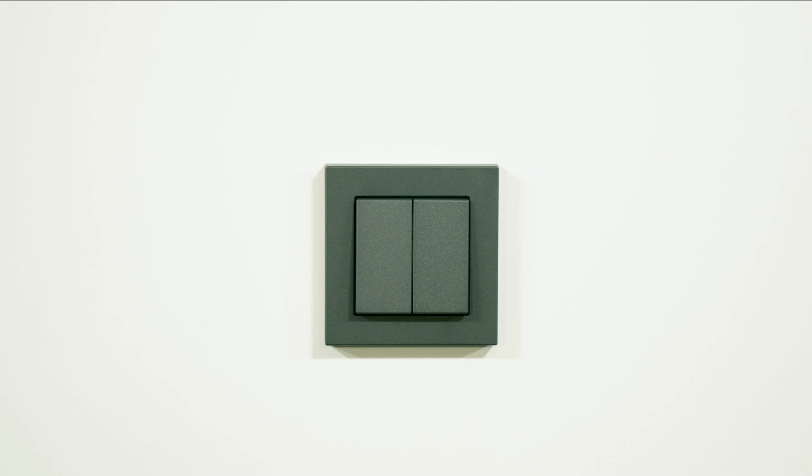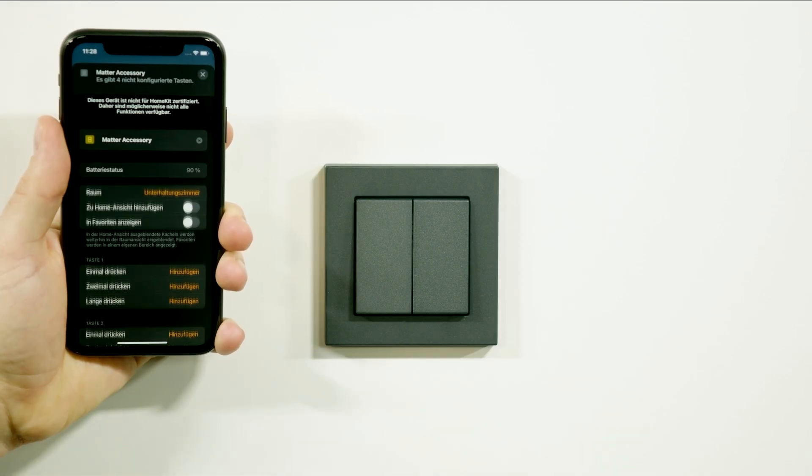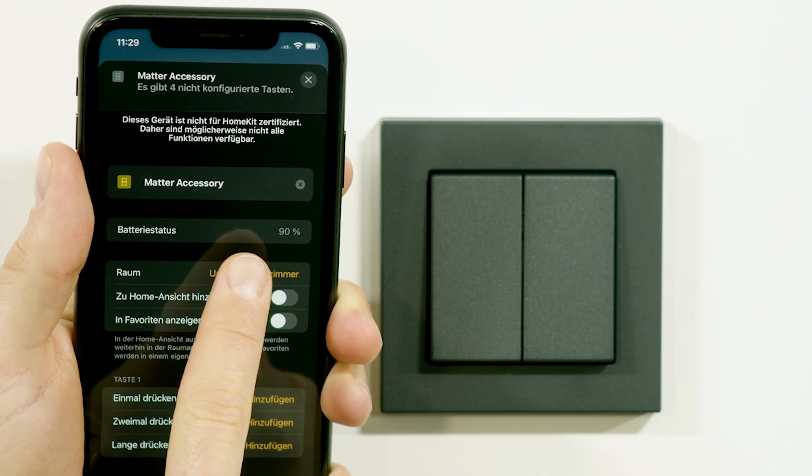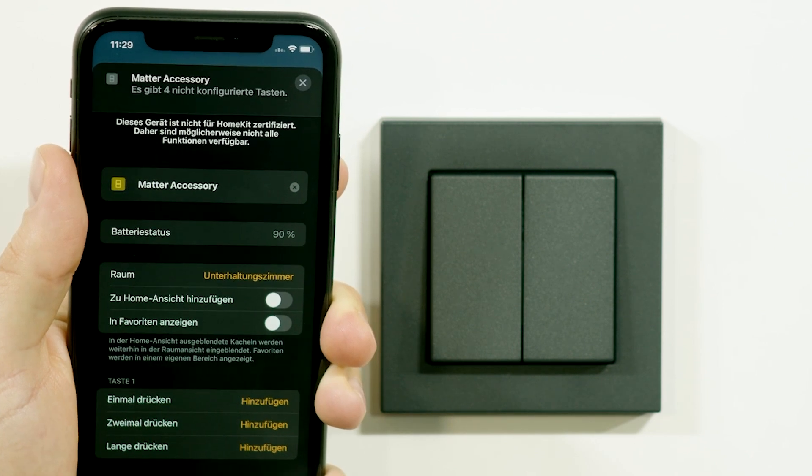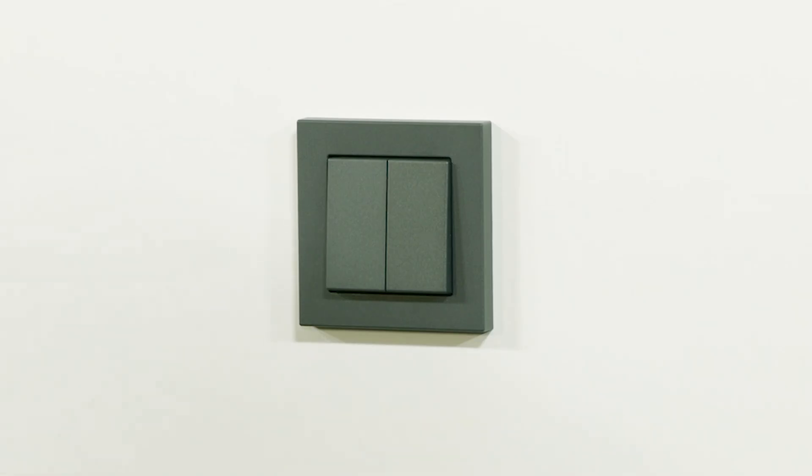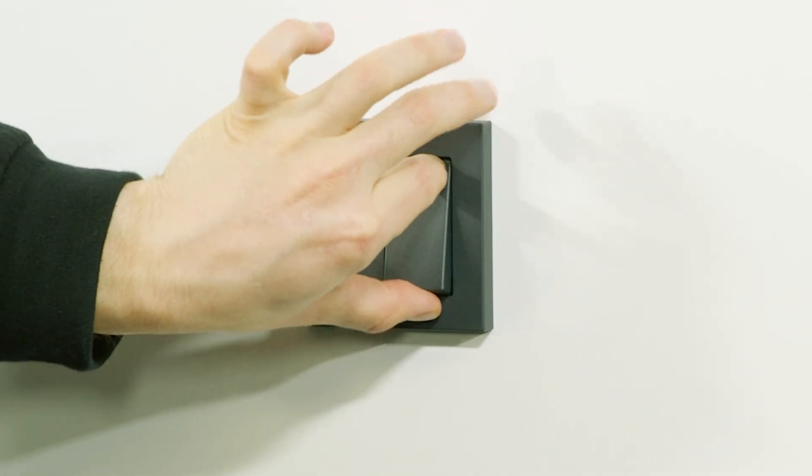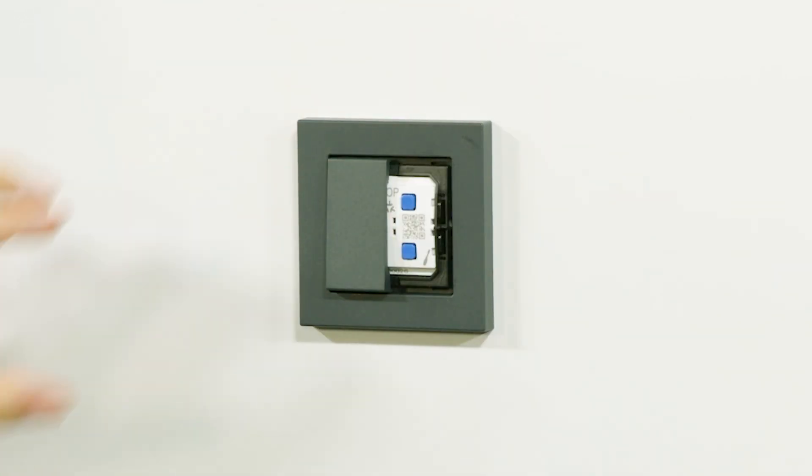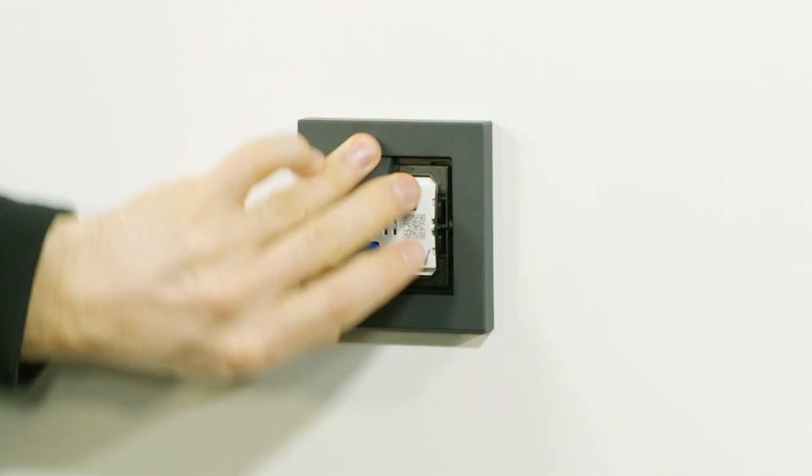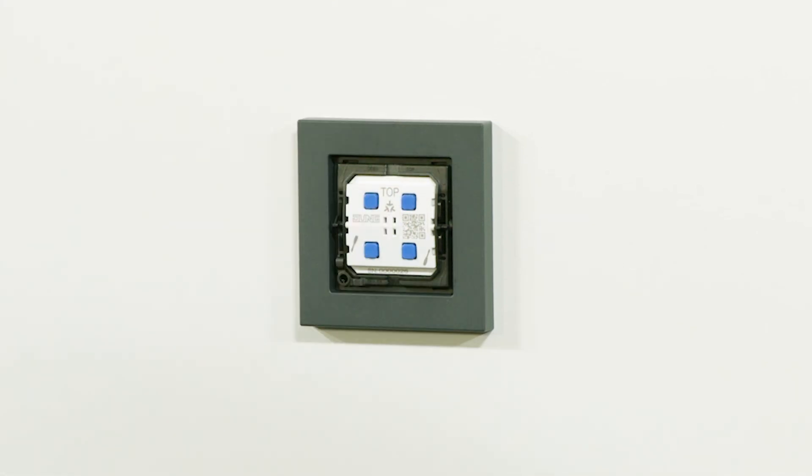The push button is battery operated. You can view the battery charge status in the app of your respective smart home system. To change the battery of your META push button, first remove the rockers. You can easily remove them by hand or use a button lever.